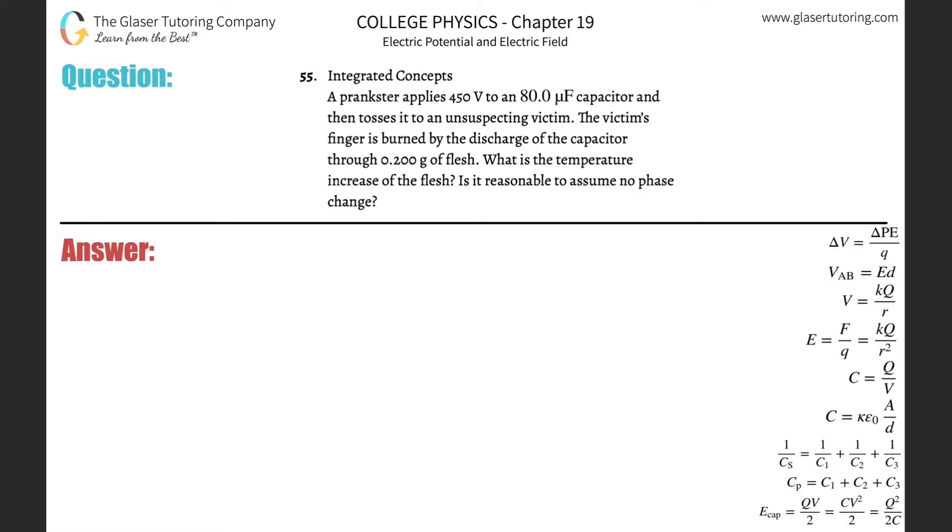Number 55. Integrated concepts. A prankster applies 450 volts to an 80 microfarad capacitor and then tosses it to an unsuspecting victim. The victim's finger is burned by the discharge of the capacitor through 0.2 grams of flesh. What is the temperature increase of the flesh?